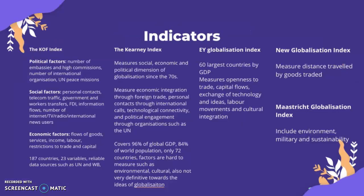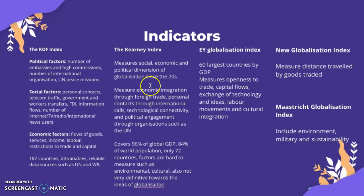There are actually five different indicators: the KOF Index, Kearney Index, EY Globalization Index, New Globalization Index, and Maastricht Globalization Index. The one to focus on most is probably the KOF Index, as it's the most widely used. In an essay evaluating indicators, it's worth mentioning the others too. The Kearney Index has arguably been discontinued as the KOF Index is much more widely used. Now we'll go through each one and what they measure.